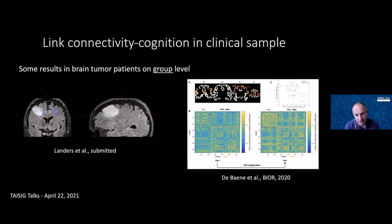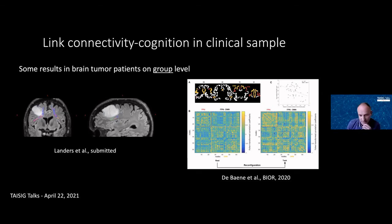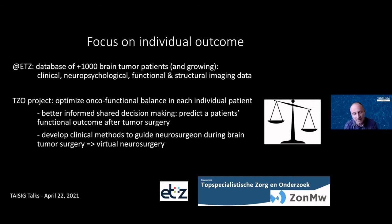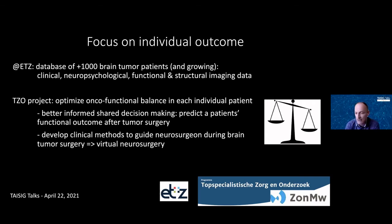As mentioned, in the clinical context it is crucial to make individual inferences, and that's why we turned to machine learning. The first project uses a database we have been generating over the last decade at the Elisabeth-Tweesteden Hospital in Tilburg, containing clinical, neuropsychological, and imaging data for more than a thousand brain tumor patients.